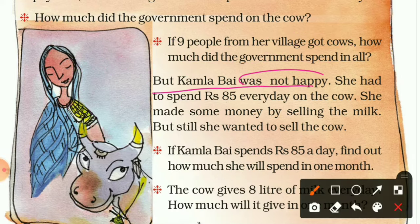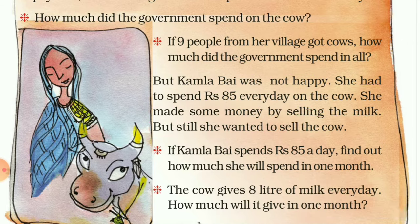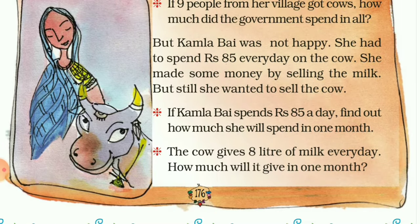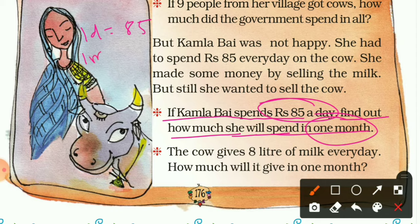But Kamala Bai was not happy. She had to spend 85 rupees every day on the cow, and she made some money by selling the milk, but still she wanted to sell the cow. If Kamala Bai spends 85 rupees a day, find out how much she will spend in one month. One month means 30 days, so we calculate 85 × 30.